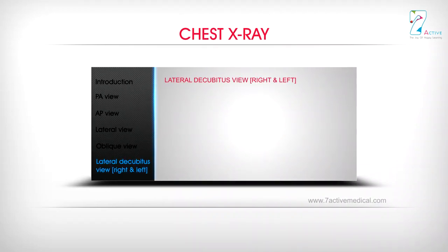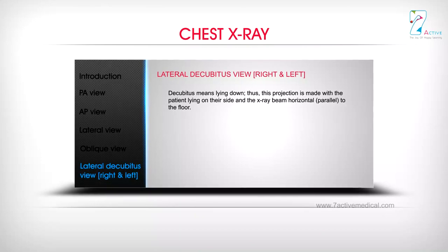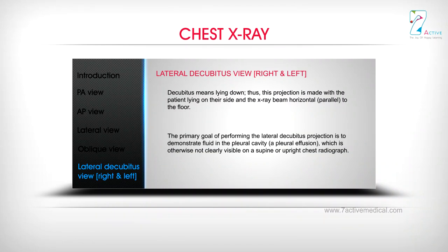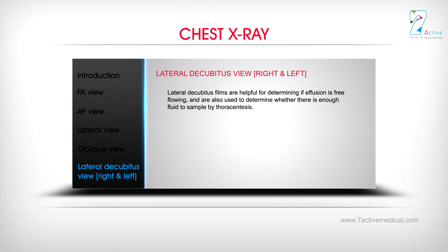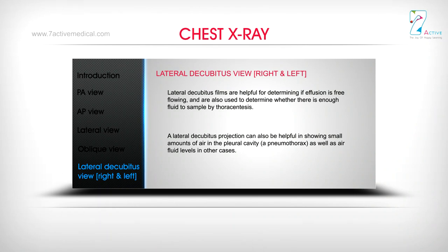Lateral decubitus view — right and left. Decubitus means lying down. This projection is made with the patient lying on their side and the X-ray beam horizontal, parallel to the floor. The primary goal is to demonstrate fluid in the pleural cavity — a pleural effusion — which is otherwise not clearly visible on a supine or upright chest radiograph. Lateral decubitus films are helpful for determining if an effusion is free flowing and whether there is enough fluid to sample by thoracentesis. This projection can also show small amounts of air in the pleural cavity (pneumothorax) as well as air-fluid levels in other cases.